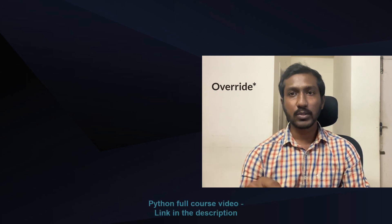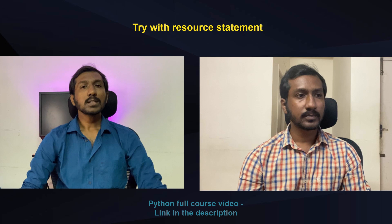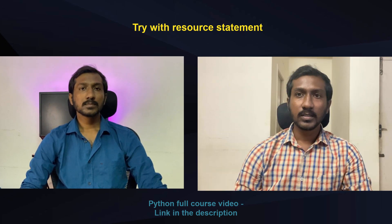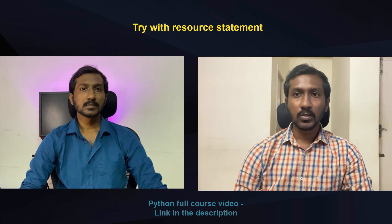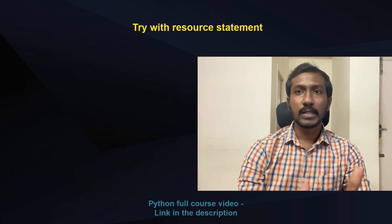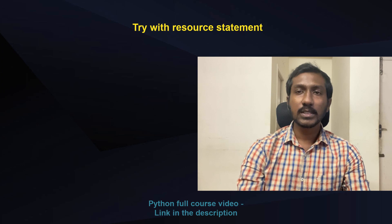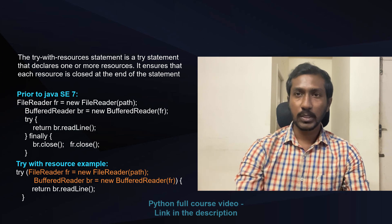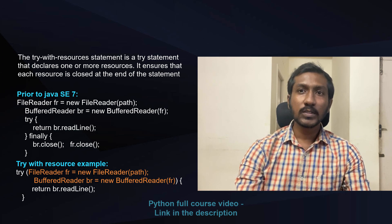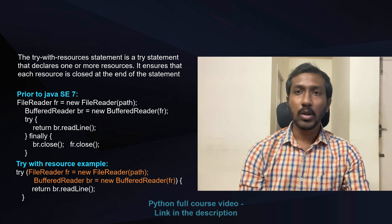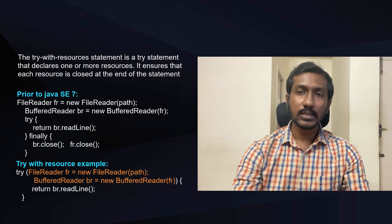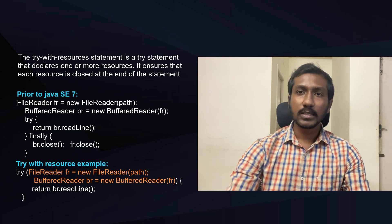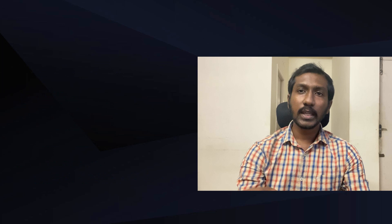What is try-with-resources? When we open a resource in Java, we normally use try-catch-finally, closing the resource in the finally block. Try-with-resources simplifies this — we open the resource in the try block, and we do not need to explicitly close it. The resource will be closed automatically even if an exception occurs.